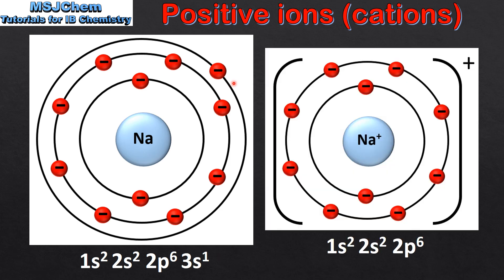The sodium atom can lose its outermost valence electron to form a 1+ ion. The sodium ion still has 11 protons but only 10 electrons, therefore it has a one positive charge. If we compare the electron configurations of the sodium ion and the sodium atom, we can see that the ion has lost the one electron in the third main energy level. This gives the sodium ion the electron configuration of a noble gas.